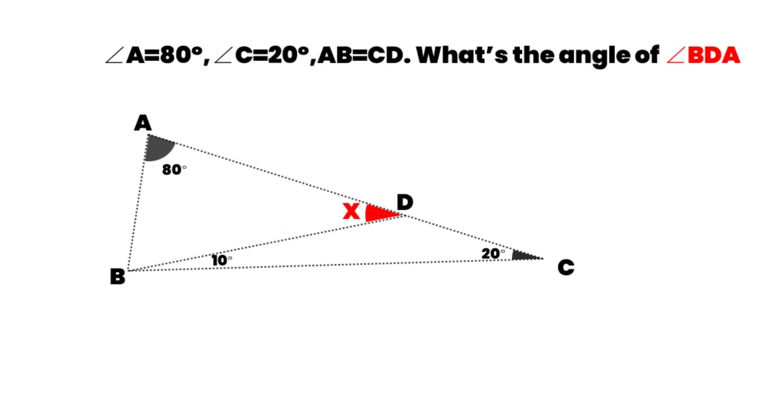We know angle BDA is the exterior angle of angle CBD and angle BCD. Therefore, angle BDA is equal to 10 degrees plus 20 degrees, which is equal to 30 degrees. So, X is equal to 30 degrees.